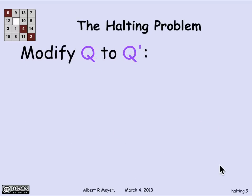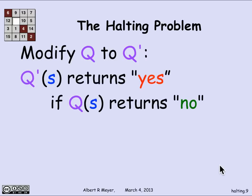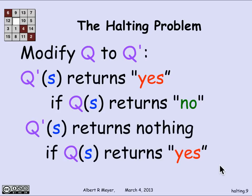Here's the trick: I'm going to modify q to act as though it was complementing the diagonal. More precisely, I'm going to modify q to be another procedure q prime, which behaves a little differently. Namely, q prime of s returns 'yes' when q of s returns 'no', and q prime of s returns nothing — that is, it doesn't halt — if q of s returns 'yes'. So q prime is like complementing the bits on the diagonal. If q of s says 'no', q prime of s says 'yes'. If q of s says 'yes' — meaning s halts successfully — then q prime does not halt successfully.